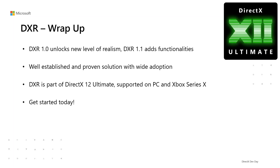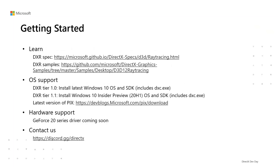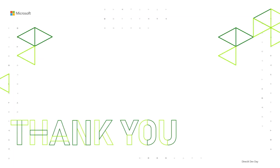You can start coding today. Game developers can find feature specs and samples on GitHub, then upgrade to the latest Windows 10 OS and SDK and download the latest PIX on Windows. To use DXR Tier 1.1, game developers need to join the Windows 10 Insider Program for OS and SDK Preview for 20H1 until it is released to the public. Driver support by GeForce 20 Series is available today for DXR 1.0 and coming soon for DXR Tier 1.1. Don't forget to come to our Discord channel to raise your questions. Now let's move on to another talk presented by a hardware partner about DXR 1.1 and DirectX 12 Ultimate.